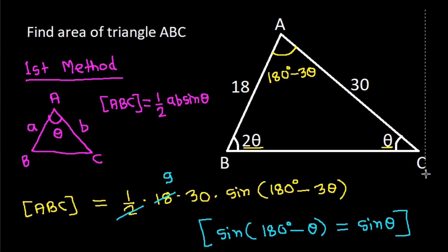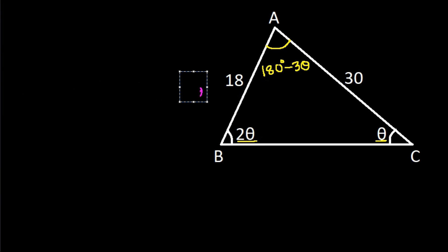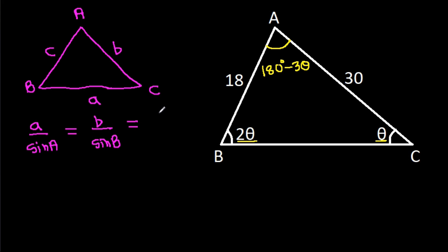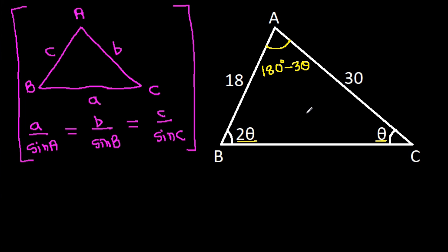Now, in any triangle ABC, by the law of sines: side over sine of opposite angle is constant. So BC/sin A = AC/sin B = AB/sin C. Applying this: 30 divided by sin(2 theta) equals 18 divided by sin theta.